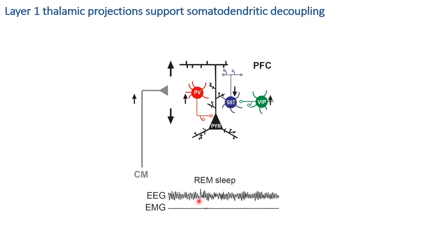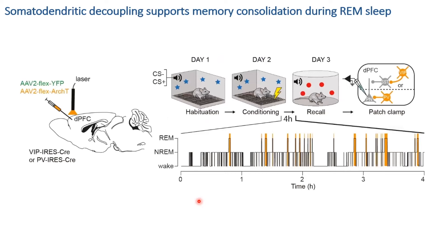We then wondered about the function of this mechanism — whether it is involved in consolidating and processing emotional information during REM sleep. Mice were subjected to a fear conditioning task: a Pavlovian conditioning where during acquisition, mice receive two auditory cues of different frequency — CS-minus and CS-plus. The CS-plus is positively paired with an aversive foot shock, so animals learn that this auditory cue predicts danger. During recall the next day, even the presentation of sounds alone generates a fearful freezing response.